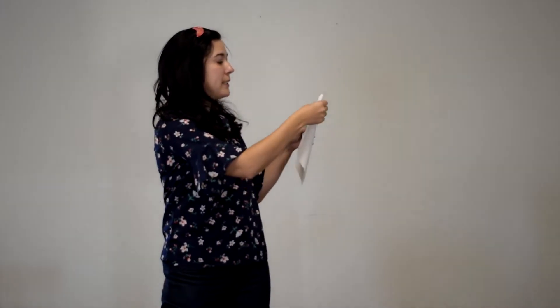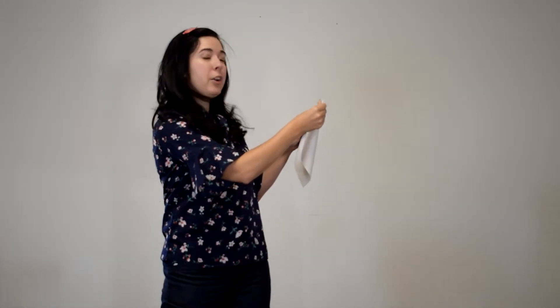The first step that you're going to do is you're going to take the top right hand corner of your paper and you're going to fold it to where it meets the left hand side. You're going to make sure that this is a right triangle on your paper like so.